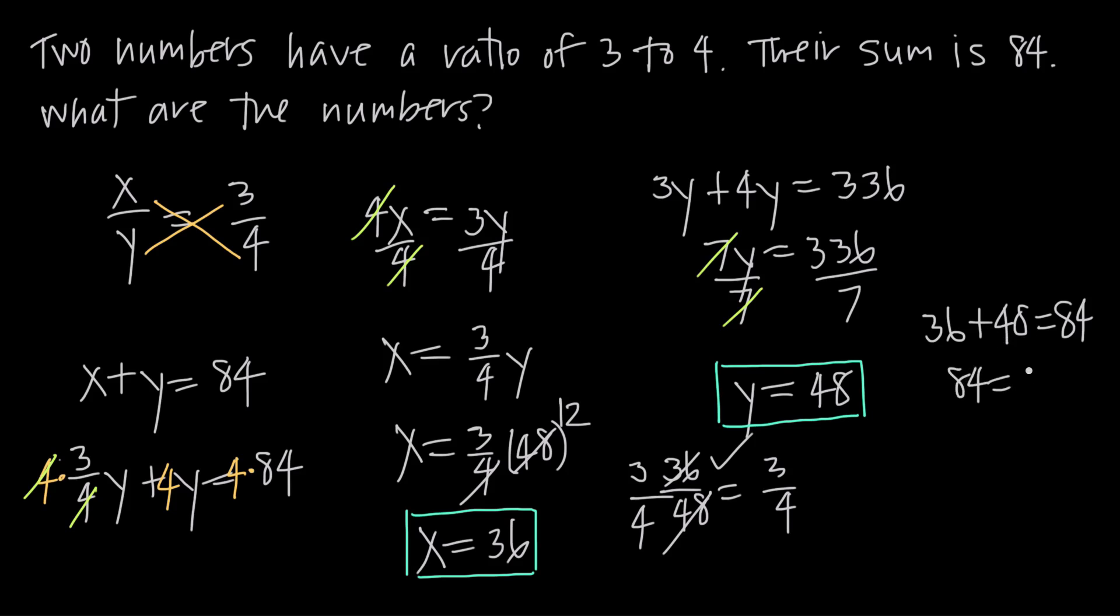So 84 equals 84. So that equation is true as well, which means x equals 36, y equals 48 satisfies that equation plus the proportion equation. So I know I found two numbers that meet these criteria.